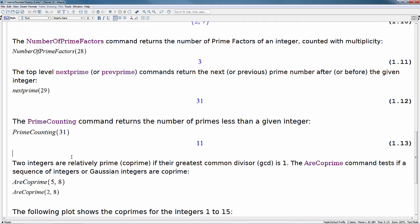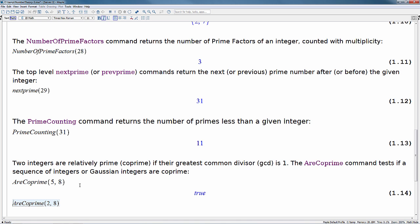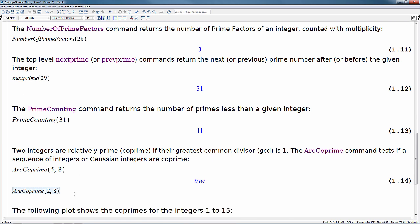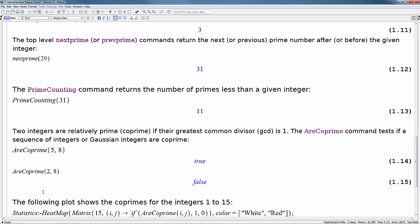Now two integers are relatively prime, co-prime, if their greatest common divisor or their GCD is 1. The r co-prime command tests if a sequence of integers or Gaussian integers are co-prime. So let's look at r co-prime of 5 and 8. So these in fact are co-primes. The greatest common divisor of these two is just going to be 1. But r co-prime of 2 and 8, which we should be able to tell very quickly, is in fact false. Because the greatest common divisor in this case is going to be 2.